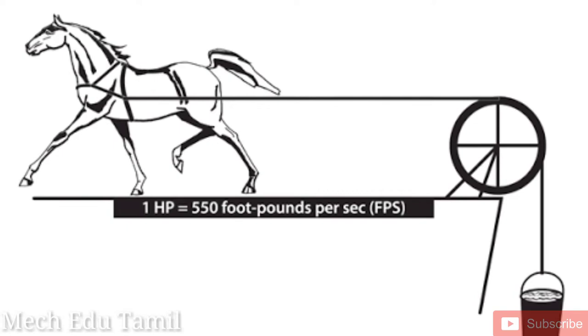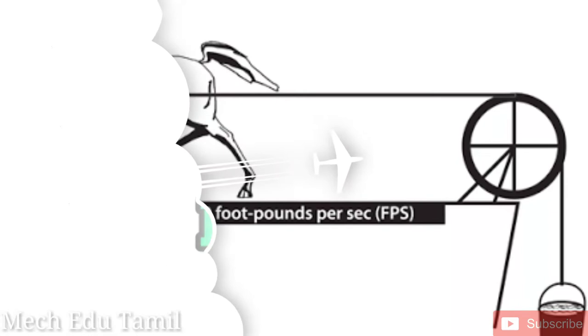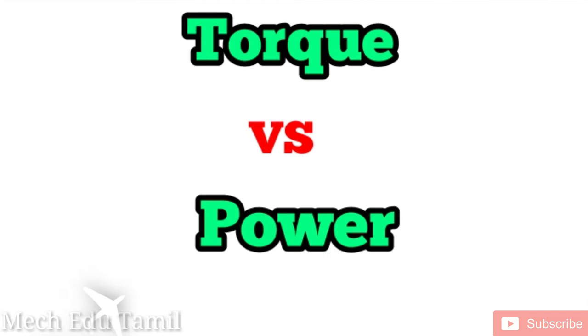So this is the major difference between torque and power. Torque is not the same as power. To get a diesel and petrol engine, at that time if you get the diesel engine, you need to get both the torque and the power.